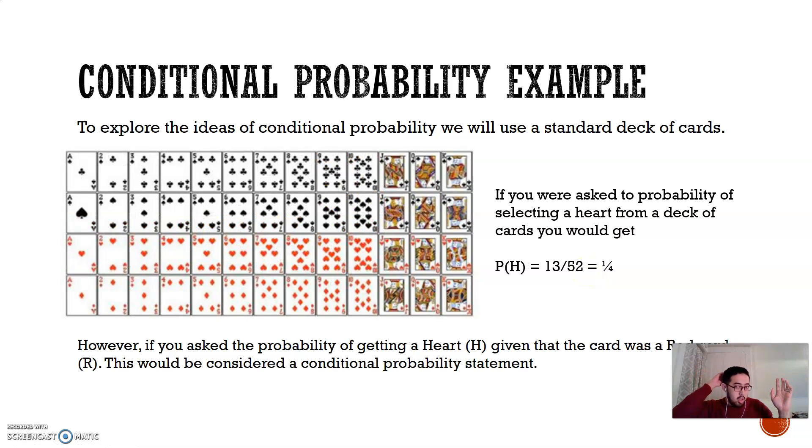However, there's no condition there. There is no condition in this case. It's just, what's the probability of selecting a heart? However, if you were asked the probability of getting a heart given that the card that was selected was a red card, this would be a conditional probability statement.